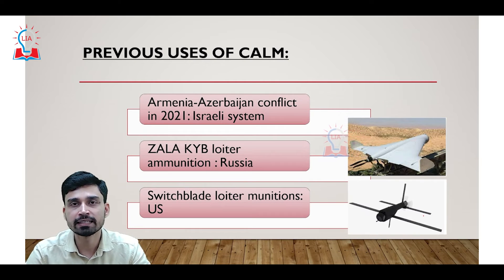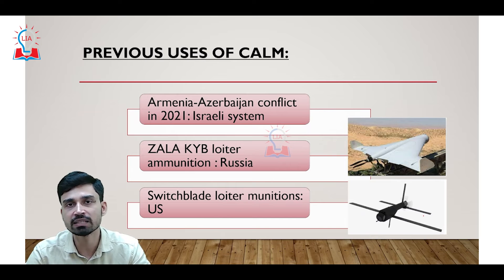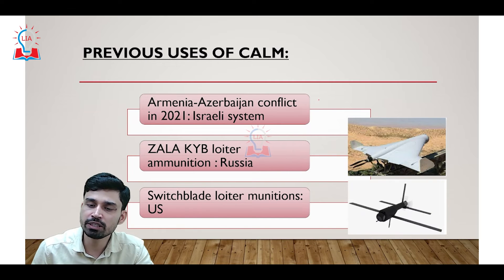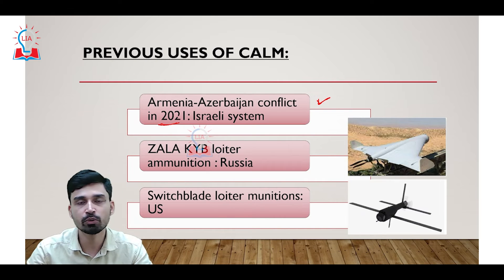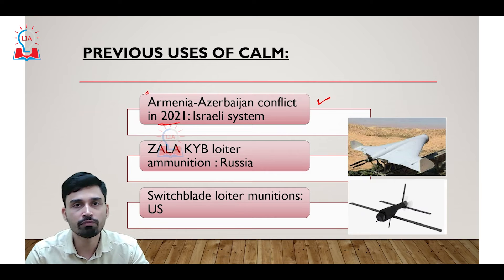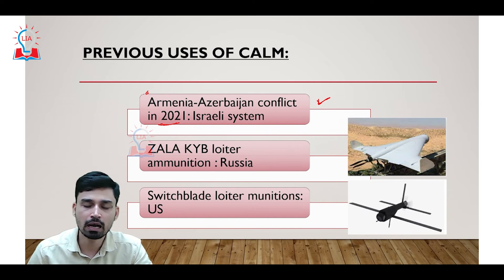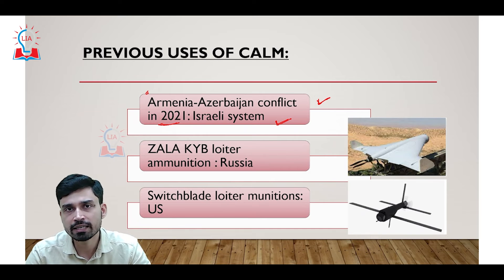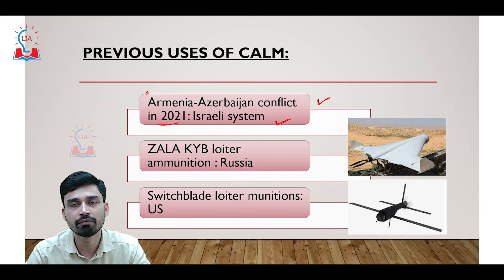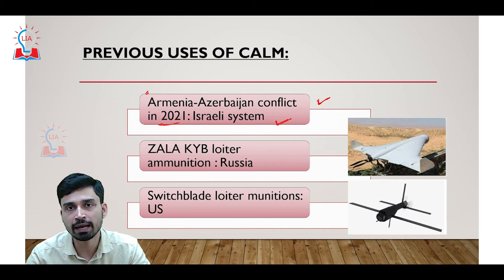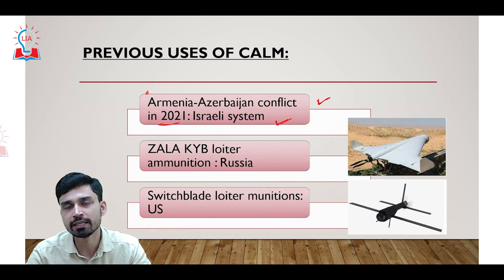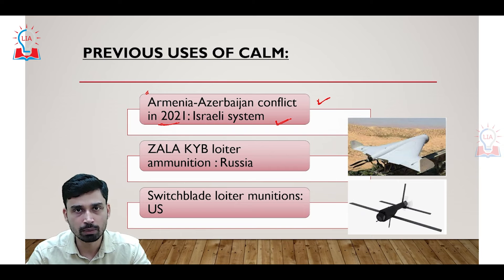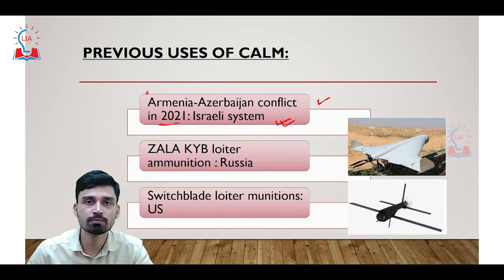A question naturally arises: is this the first time such systems are being discussed, or do we have previous uses of CAM in any war? Three recent uses have come to notice. The first was in 2020 during the Armenia-Azerbaijan conflict, where Azerbaijan heavily used CAM systems — largely Israeli systems — against Armenian military targets and vehicles. This provided Azerbaijan with an upper hand and enabled it to gain a strong foothold in large areas of the disputed Nagorno-Karabakh territory, marking the first successful large-scale use of CAM systems in recent times.